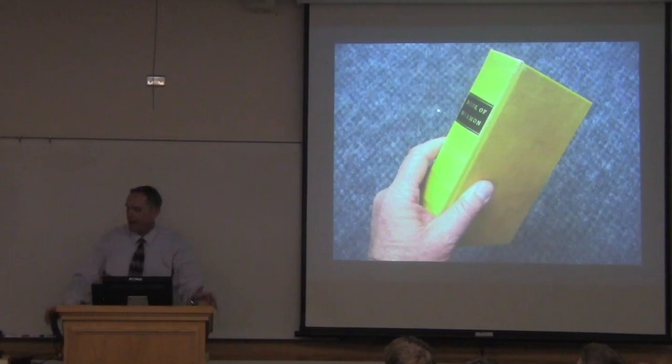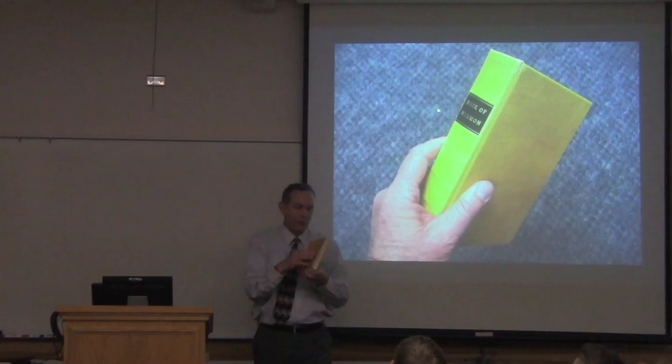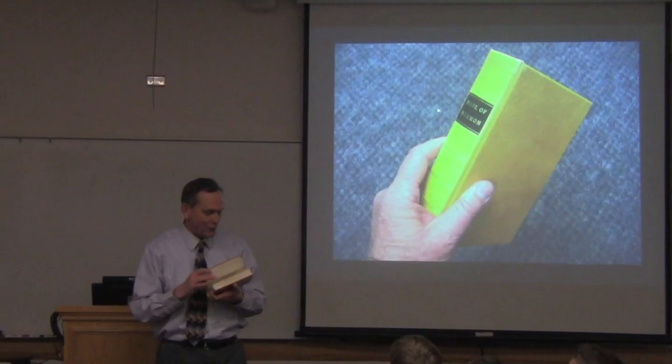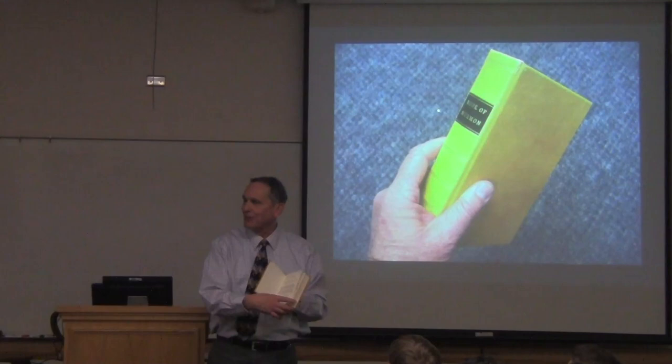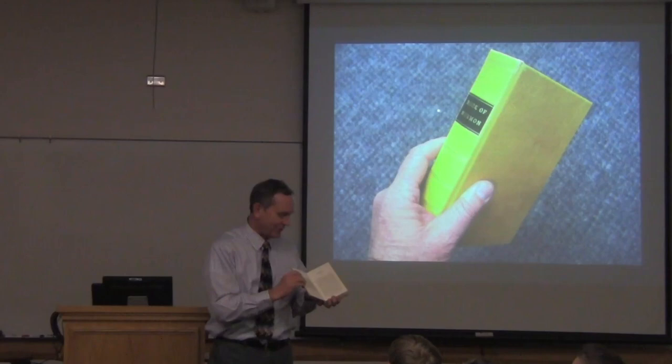This is my facsimile edition of the 1830 original edition of the Book of Mormon. I got this as a birthday gift from my new wife Kim back in 1980. It was a project of the church for the 150th anniversary of the organization of the church, to do a facsimile publication of the first edition. So this is kind of a real treasure — it's kind of hard to get these anymore, at least from the 1980 sesquicentennial celebration.